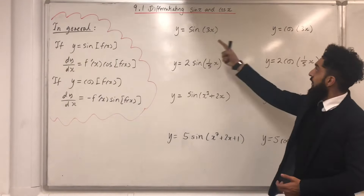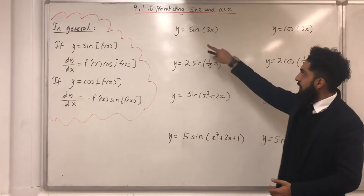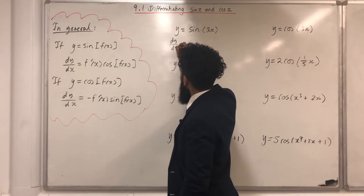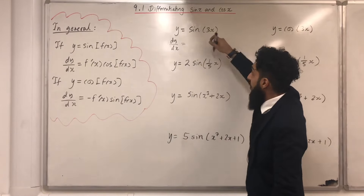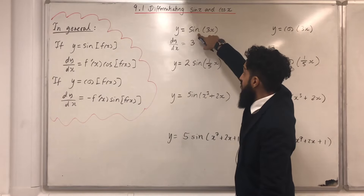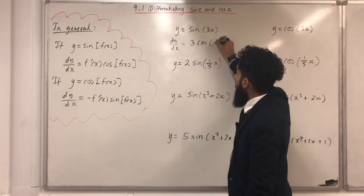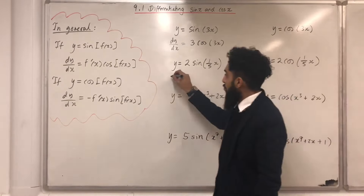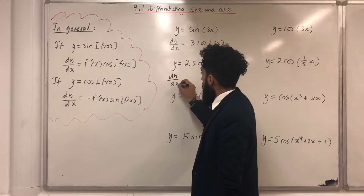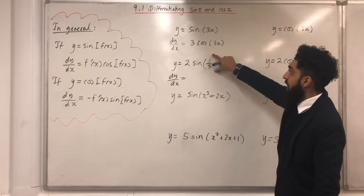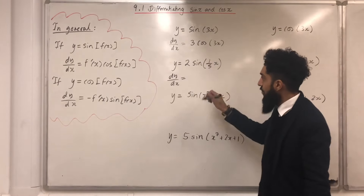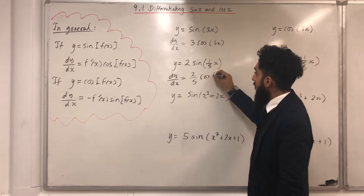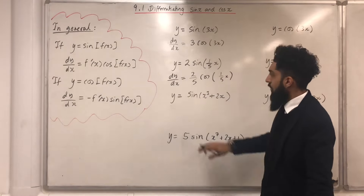So now I'll be differentiating each of these y equations. For y equals Sine 3x: dy/dx equals 3 Cos 3x, since differentiating 3x gives 3 and Sine differentiates to Cos. For y equals 2 Sine of a fifth x: differentiating a fifth x gives one fifth, multiplied by 2 gives 2 over 5, so dy/dx equals two fifths Cos of a fifth x.